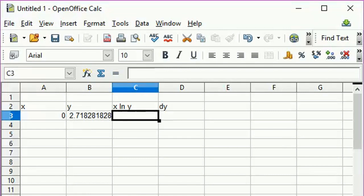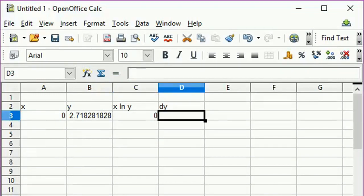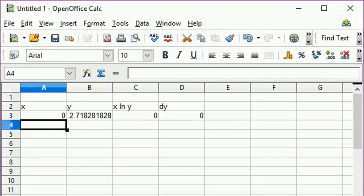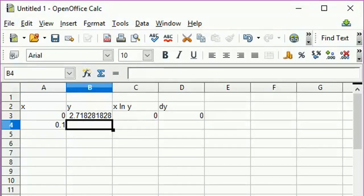Delta y is going to be the derivative times our step size, 0.1. Our x value increases by the step size, 0.1. Our y value increases by the delta y value we just calculated.